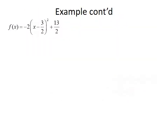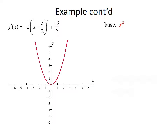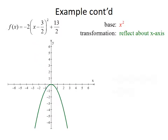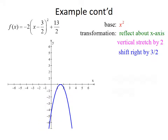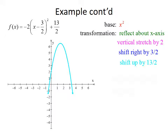Now our function is written in standard form. We can use graphing by transformations to graph the function. We start with the base function x squared. A negative sign outside reflects the graph about the x-axis. A 2 multiplied outside gives a vertical stretch by 2. Subtracting 3 halves inside shifts the graph right by 3 halves. Adding 13 halves outside shifts the graph up by 13 halves.